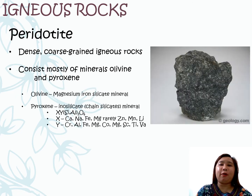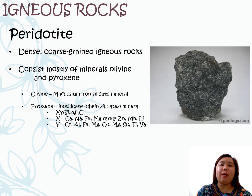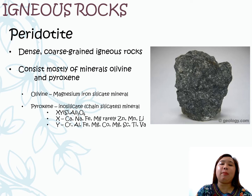Another example of igneous rock is the peridotite. It is a dense, coarse-grained igneous rock, and consists mainly of minerals such as olivine and pyroxene. Olivine means it is rich in magnesium and iron silicate minerals. While pyroxene means it is composed of inosilicate minerals or chain silicate minerals, which means it could have elements such as calcium, sodium, iron, and many others.